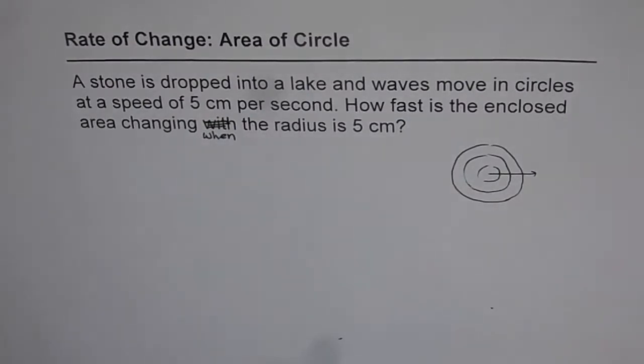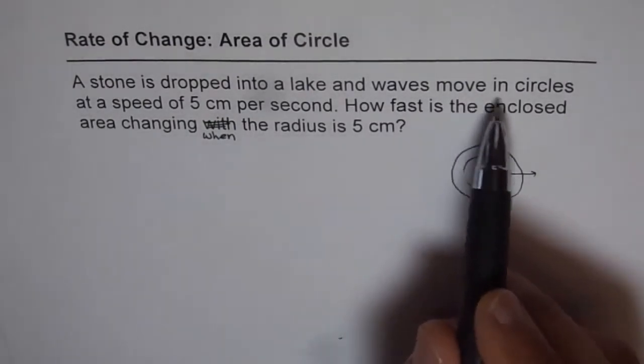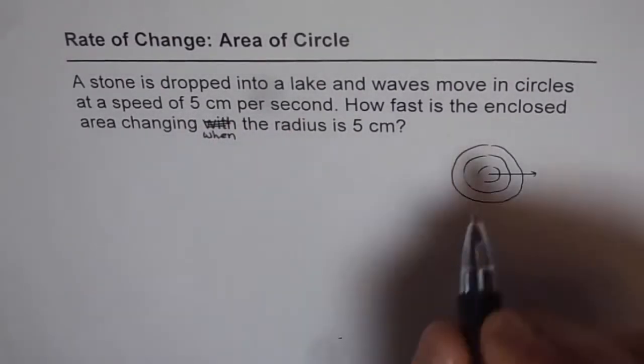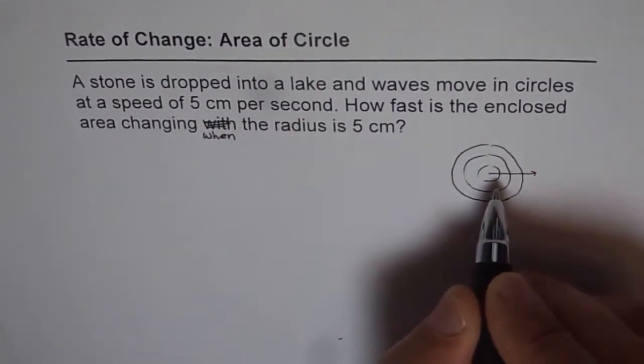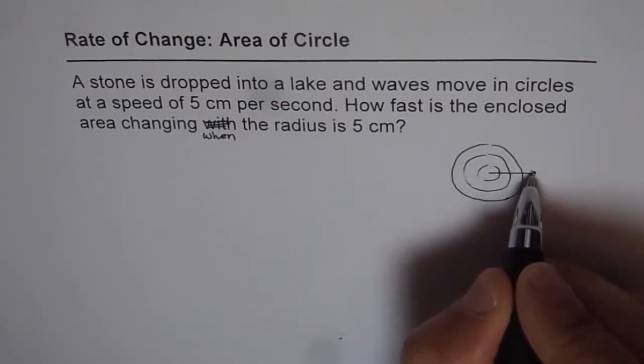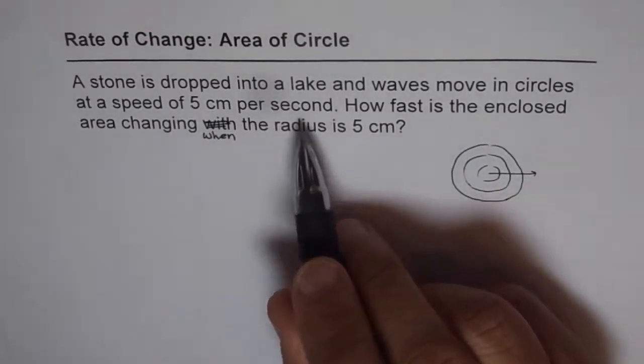And we are already given that the wave moves in circles at a speed of 5 cm per second. So the outward movement of the wave, which we can say change in radius, is 5 cm per second.